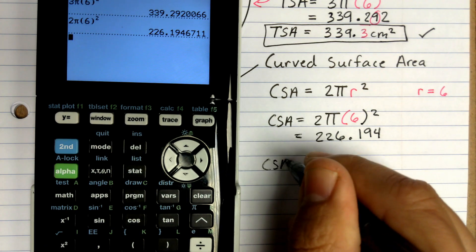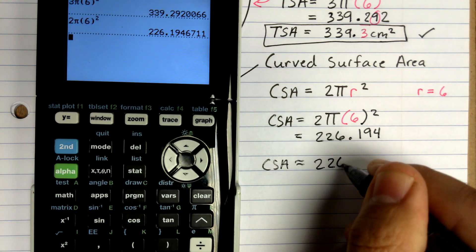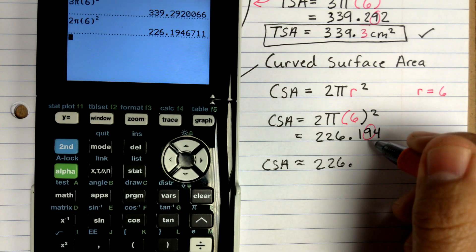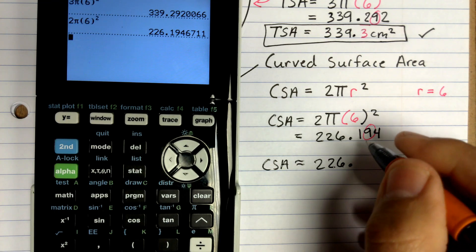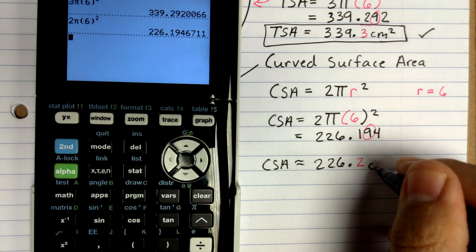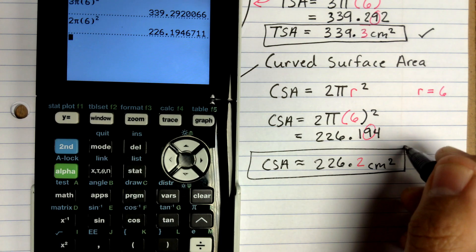Now when we write our final answer and we approximate it, I'm going to go ahead and write this as 226 point, and that 9 right there tells me to turn that 1 into a 2. And then we'll have centimeters squared because we're dealing with squared units.